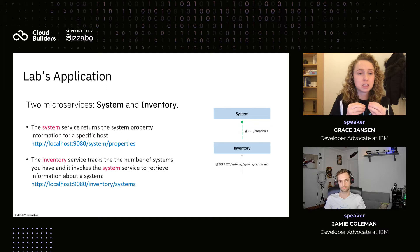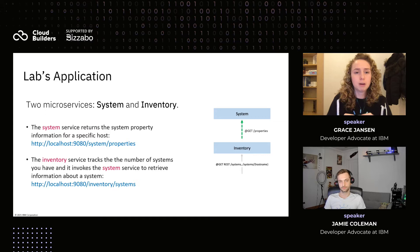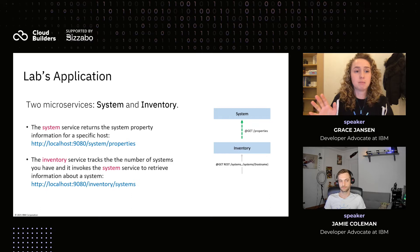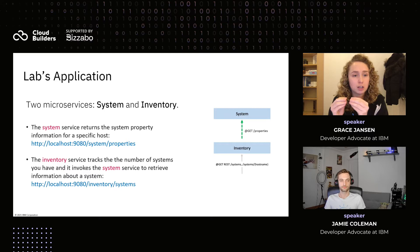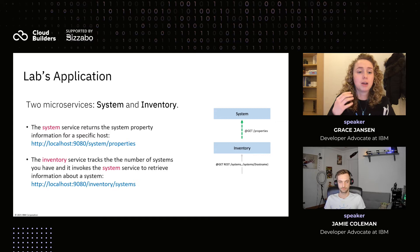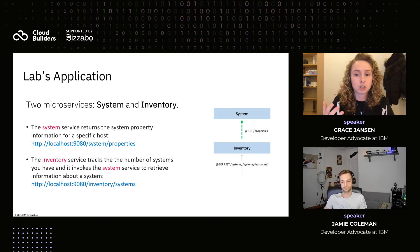The actual application within those labs, we try to keep the same just to make it easy to follow along. For example, whether I'm looking at how to introduce logging or metrics, those are two different labs, but we use the same application — so you can just focus on the new technology. It's made up of two different microservices, kept really simple: system and inventory. The system service returns system property information for your host, and the inventory service tracks the number of systems you have and can invoke the system service to retrieve that information.